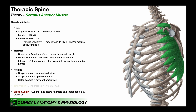Going down from that, we have the middle heads of the serratus anterior. These are the ones that originate off of ribs three through six — ribs three, four, five, and six. These four heads insert on the anterior surface of the scapular medial border, which is sometimes referred to as the costal surface, because the anterior surface of the scapula is in contact with the ribs.